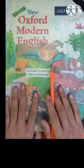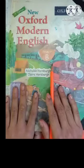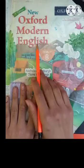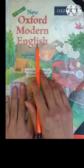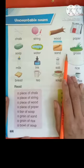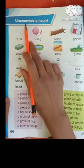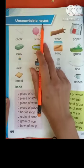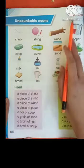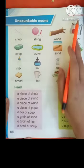Assalamu alaikum students, how are you all? Students, open your Modern English book, page number 44. On this page, the topic is uncountable nouns and we have to learn new words.